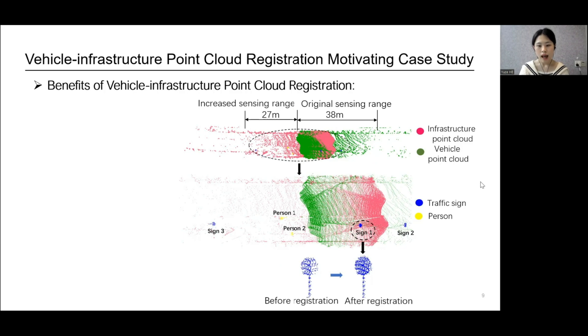The infrastructure point cloud is pink and the vehicle point cloud is green. The results show that after aligning the two point clouds, the effective sensing range of the vehicle can be extended from about 38 meters to 65 meters.